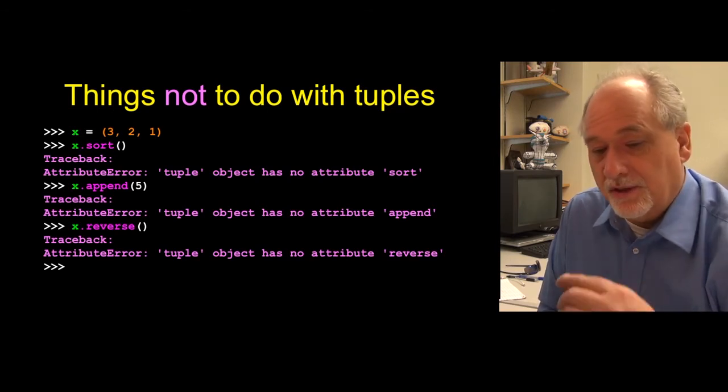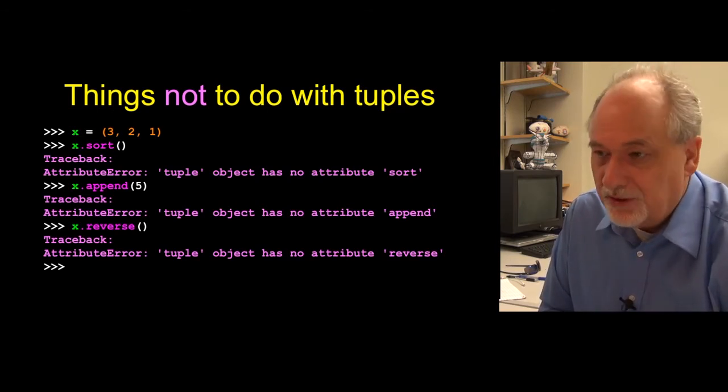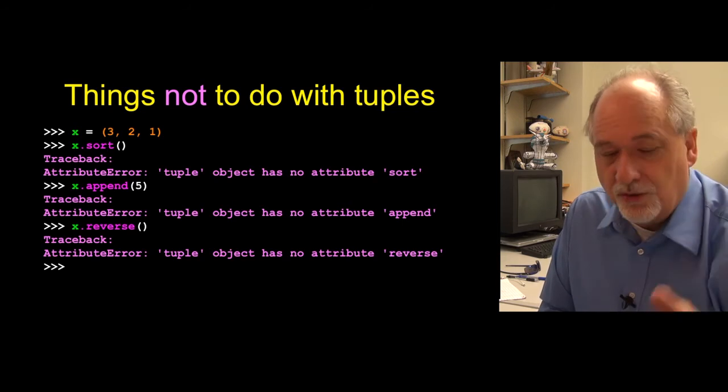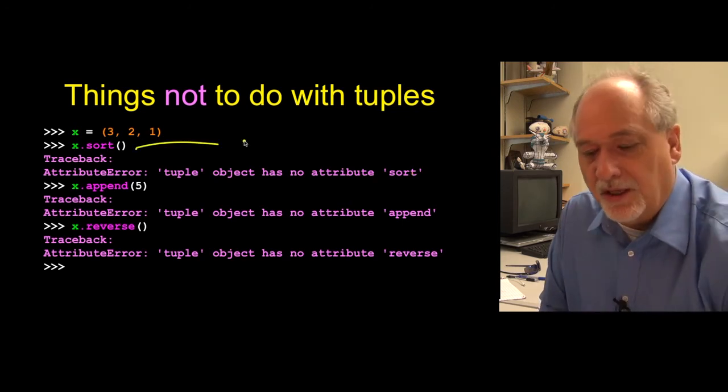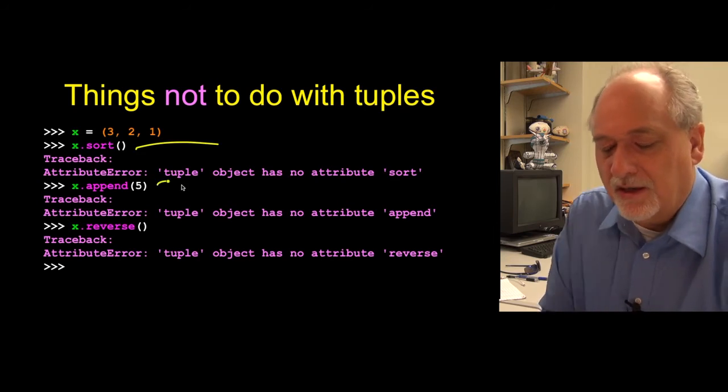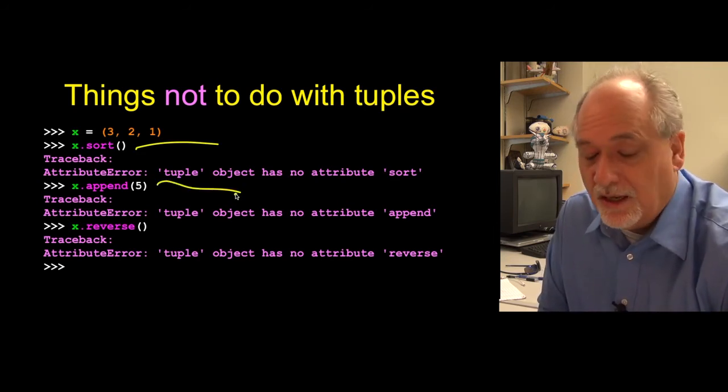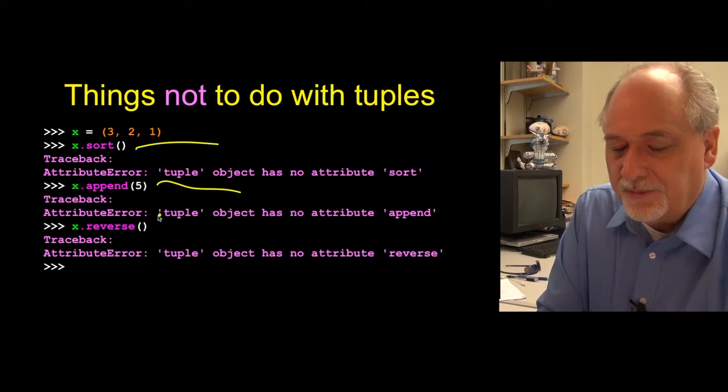So there's a lot of things that you can do with lists that you also can't do with tuples, but they're really just a corollary of this notion of non-mutability. Like you can sort a list, but you can't sort tuples. You can add a five to the end of three, two, one. Can't do that in a tuple, but you can in a list. And flip the order.